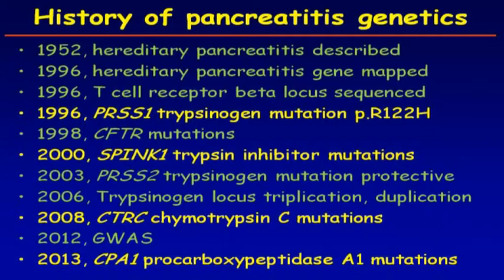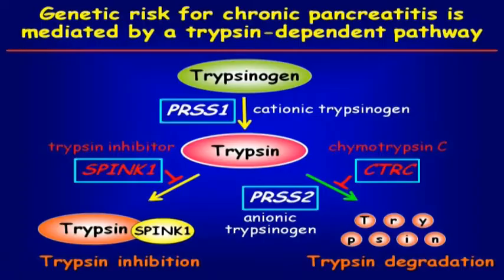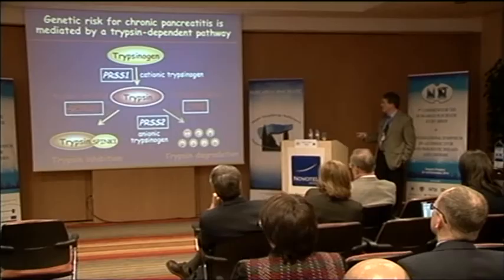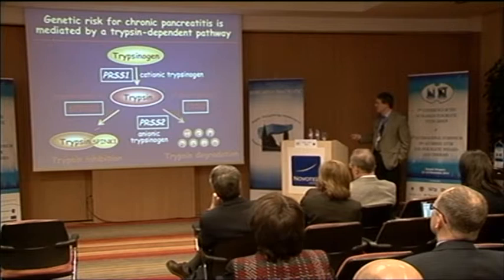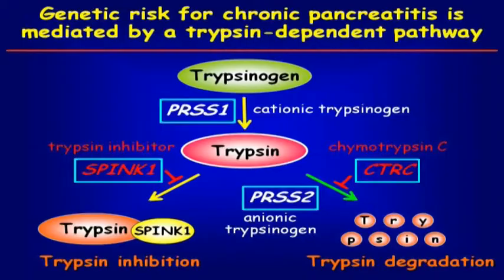You can take all these different papers and put them together in a very simplistic model where trypsin has a central role, and the different mutations can increase trypsin levels by different mechanisms. If you have a mutation in cationic trypsinogen, this will stimulate activation and increase trypsin levels — a very strong risk factor. There are two protective mechanisms: inhibition by SPINK1 or degradation by CTRC, and if either of these suffers a loss of function, you increase risk of chronic pancreatitis.